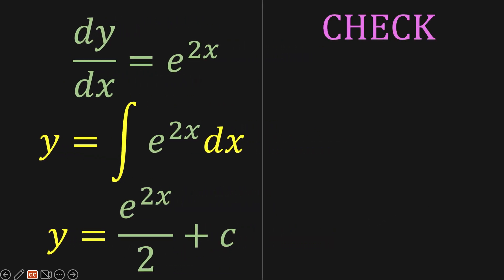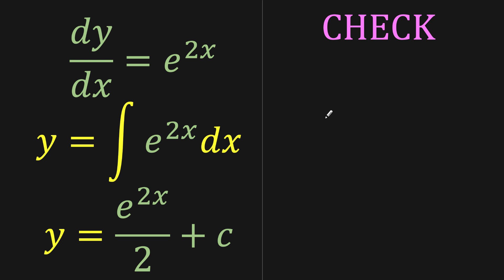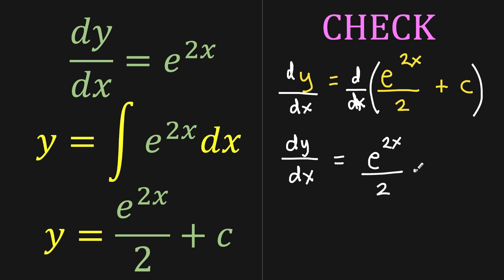Now to check if our answer is correct, we just have to reverse the process. So we begin with the solution we arrived at: y equals e raised to 2x over 2 plus c. Then we take the derivative of both sides. So d over dx, we write d over dx of this function. So dy over dx equals the sum of the derivatives of each of these two terms. The derivative of e to the 2x over 2 equals the function e raised to 2x over 2 times the derivative of the inner function using the chain rule.